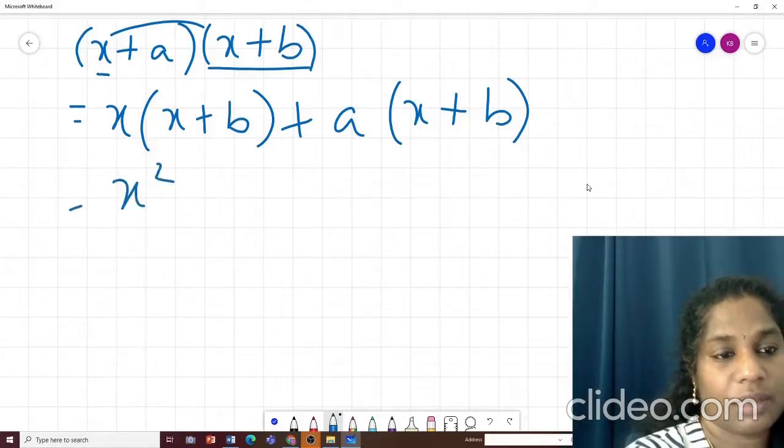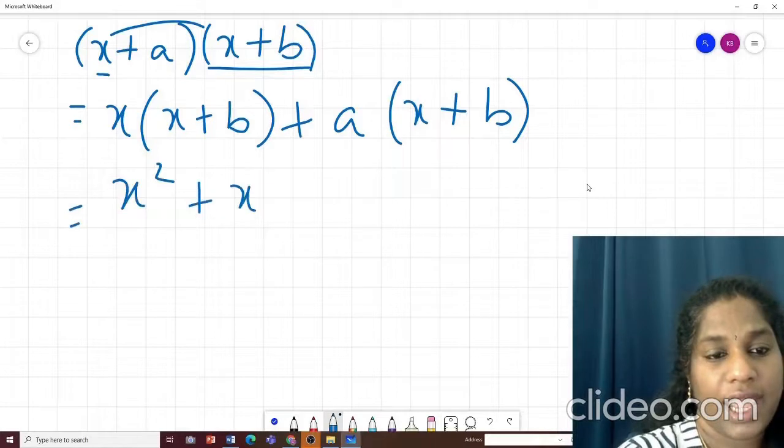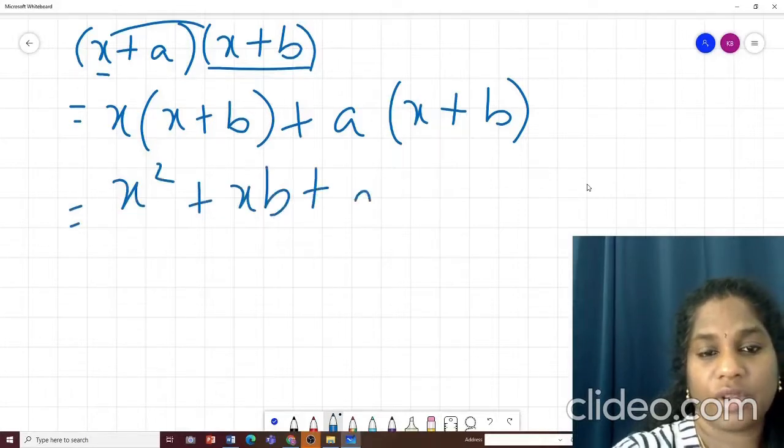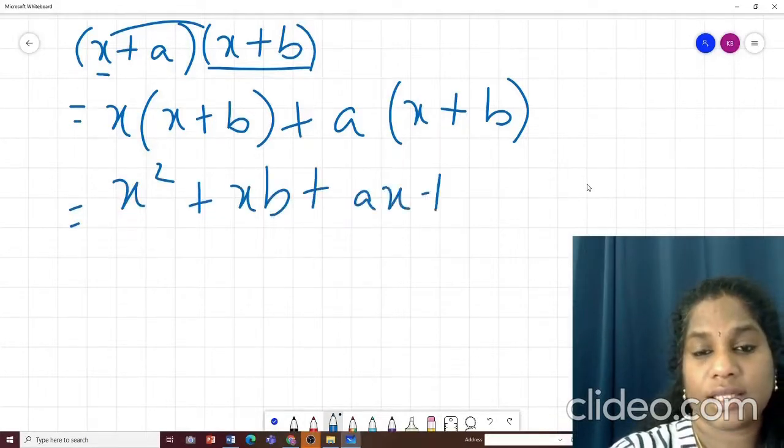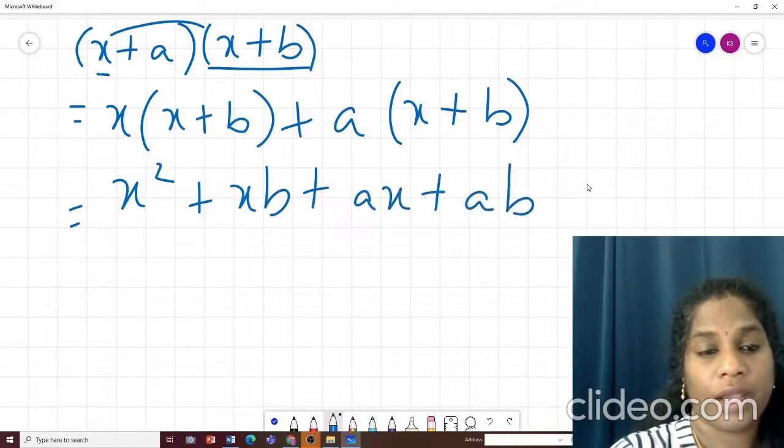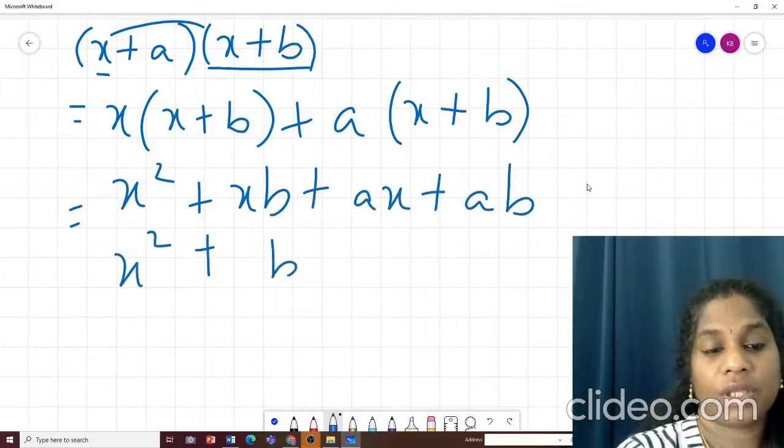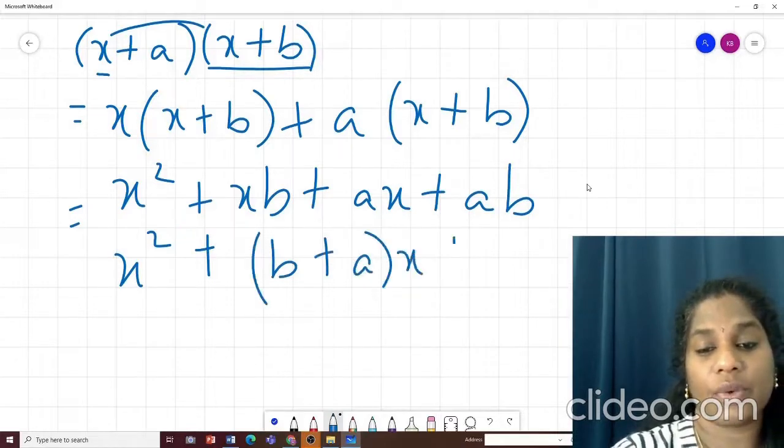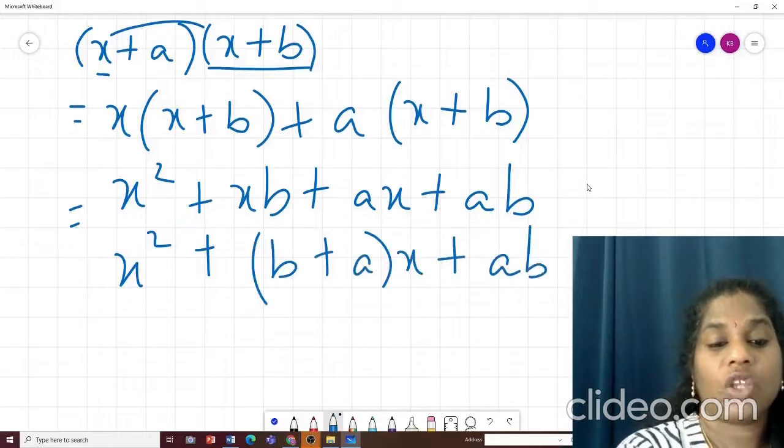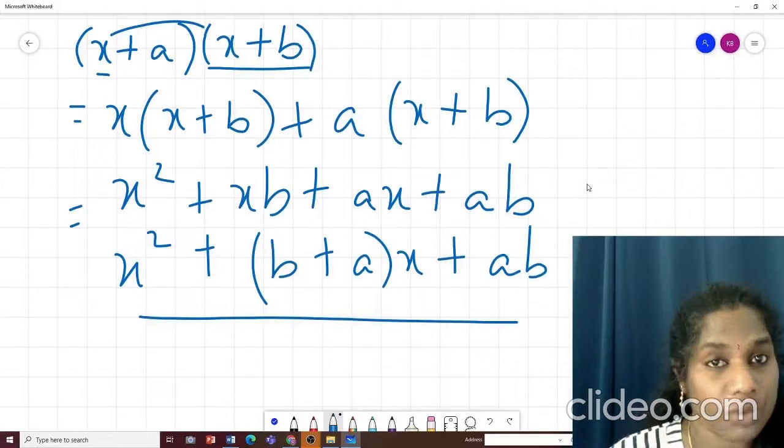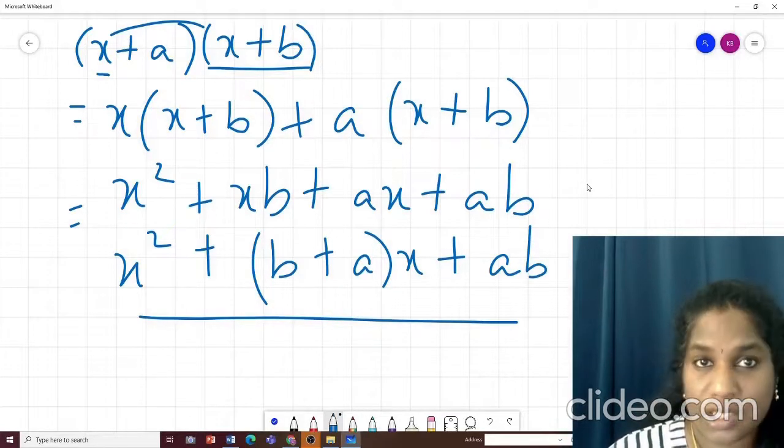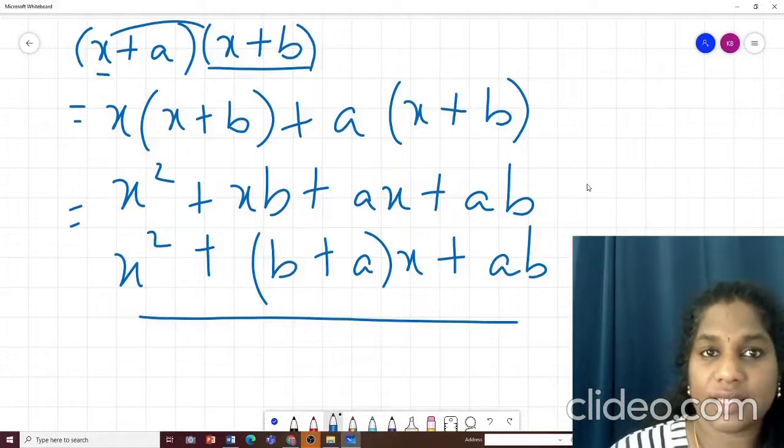So this will become x square plus xb or bx plus ax plus ab. Then what is common in this? X is common. So I can write in the bracket b plus a and I can write x outside. See I got the answer. Use this trick only if you don't remember. But always try to by heart these identities. It saves lot of time.